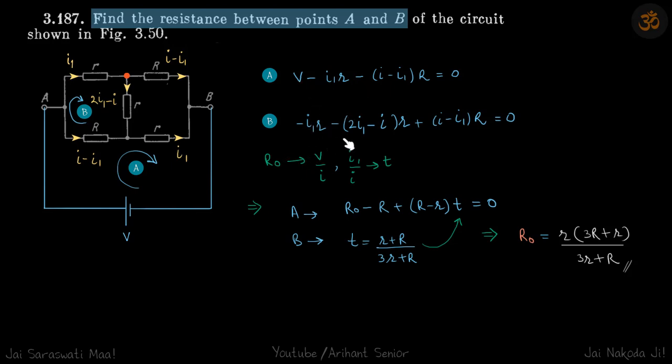So we divide both equations by I. So first equation will become R naught minus R plus R minus R into T. So there's a bit of rearrangement here. So don't think this R corresponds to I1 R. And second equation, when I divide by I, we will get everything in terms of T. So T is I1 by I. So then we just put the value of T here in first equation and we get R naught, which we wanted as our answer.